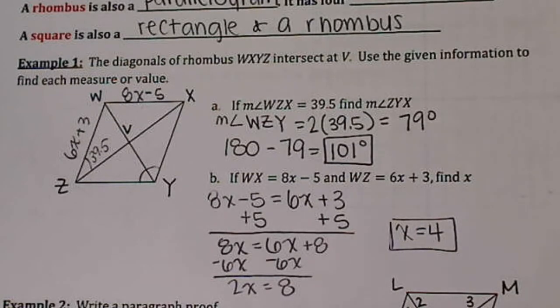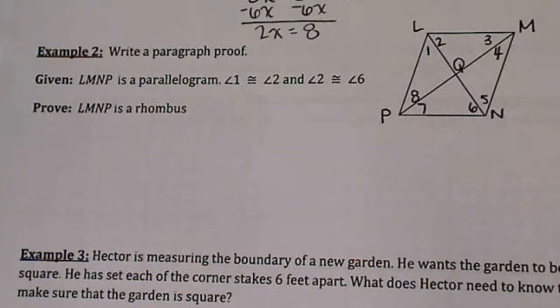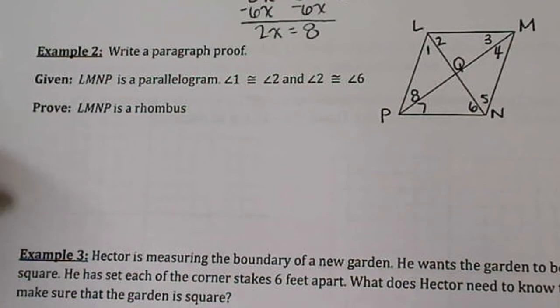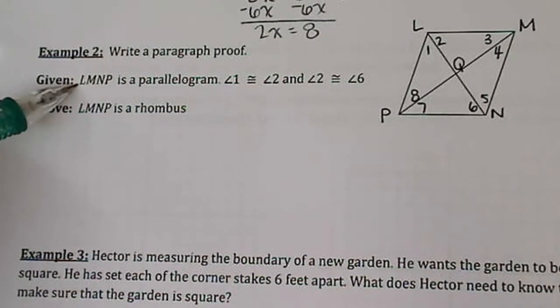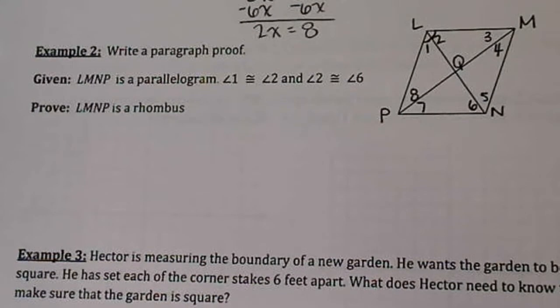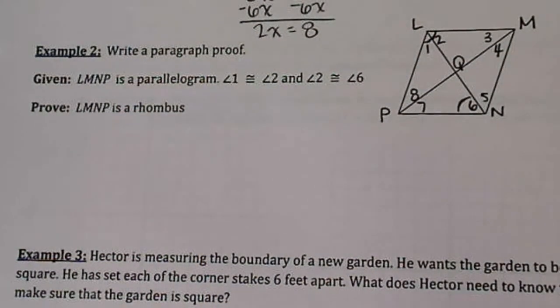So in number 2, we get to see a proof, a paragraph proof. Now, I know what you're thinking. You hate proofs, and so do I. But we have a not so big space, which means it's not going to be very long. You know that LMNP is the parallelogram. You know that angle 1 is congruent to angle 2, and you know that angle 2 is congruent to angle 6.